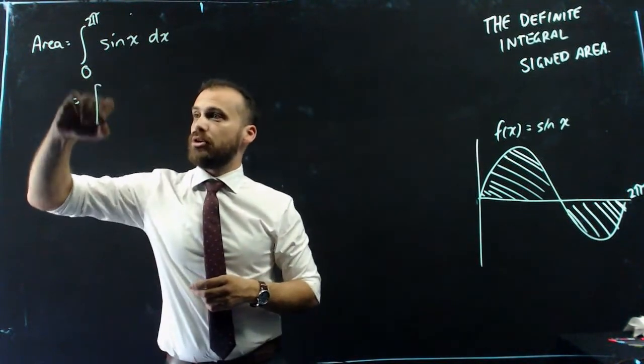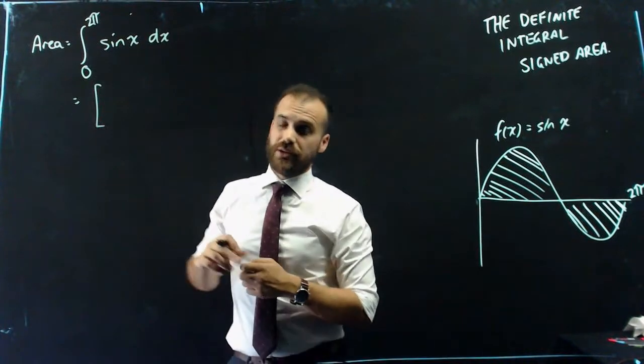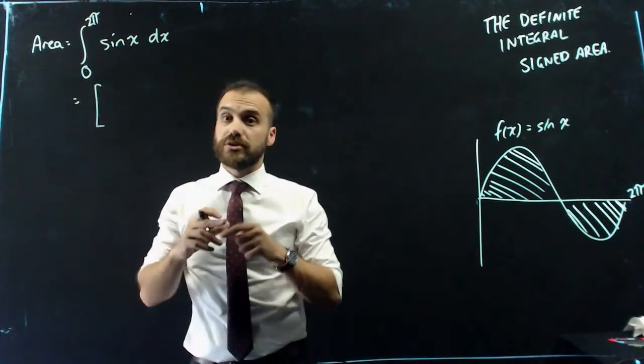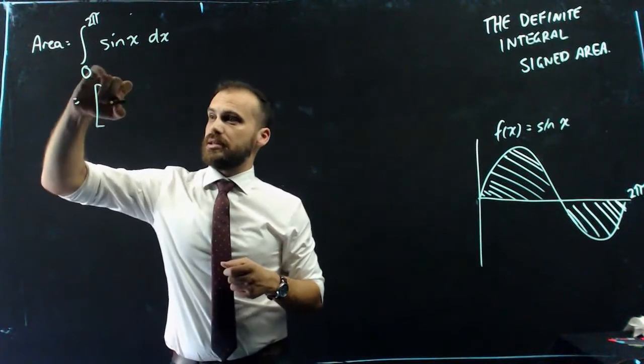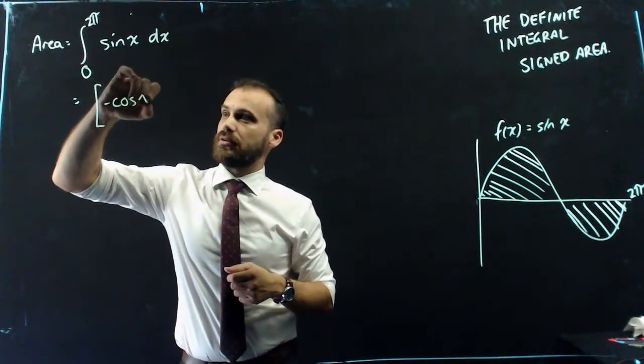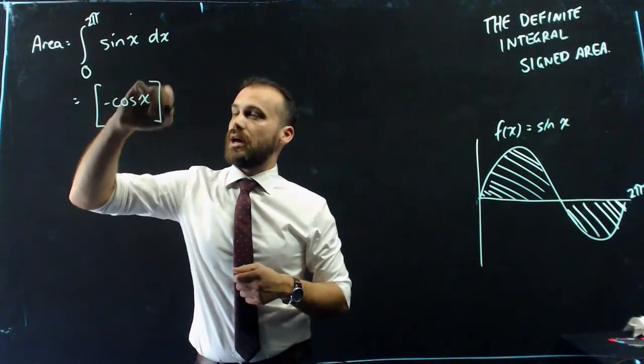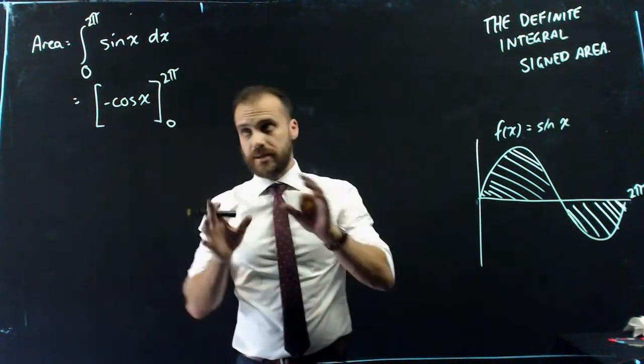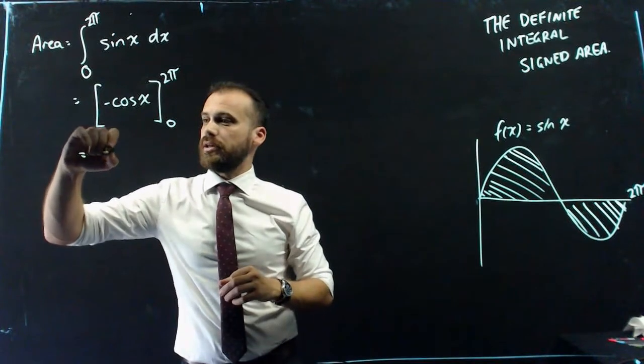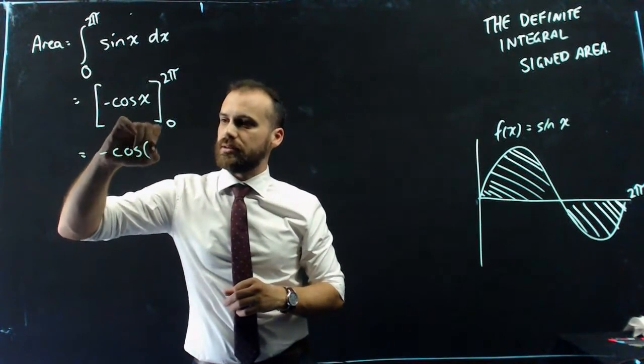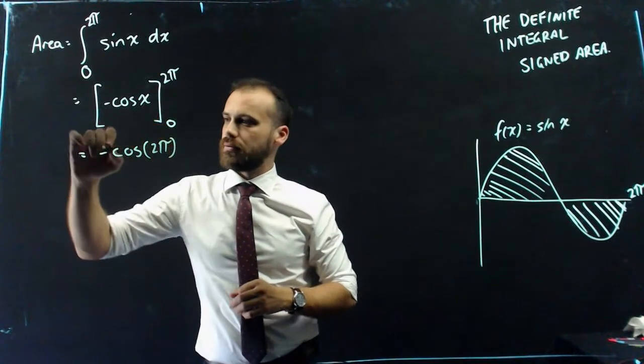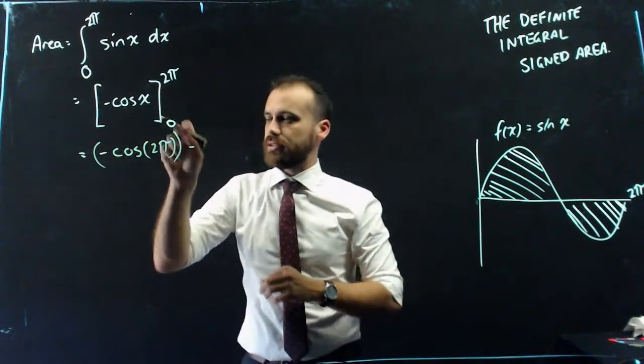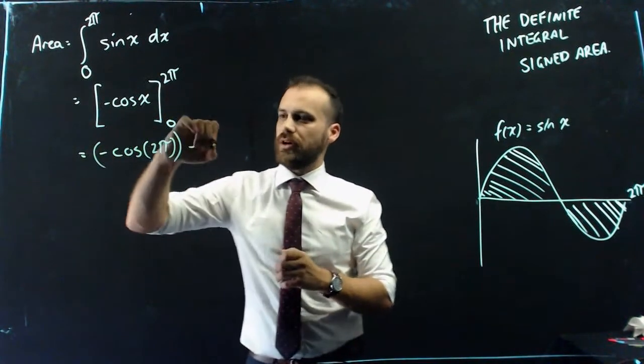So quickly jumping through it, open a bracket, the derivative of sin, sorry, the integral of sin is negative cos x, and we're working between 2 pi and zero. And next steps here are to sub 2 pi in for our x, and then subtract subbing zero in for our x.